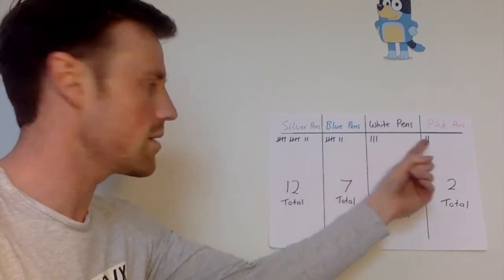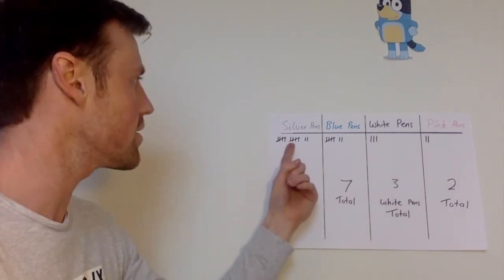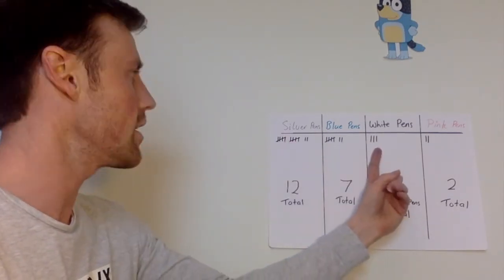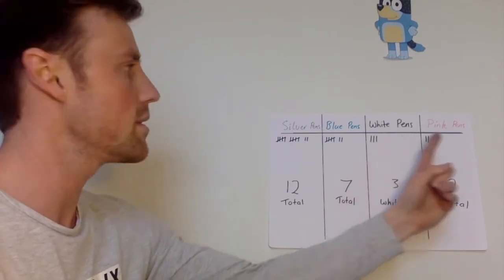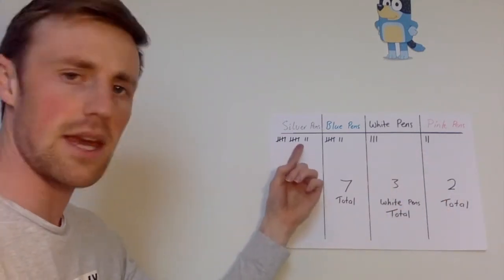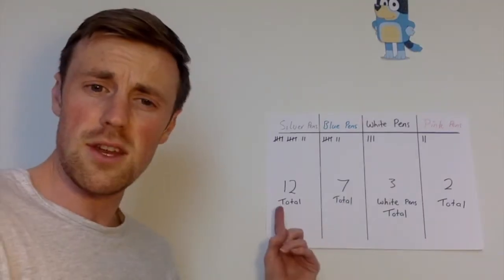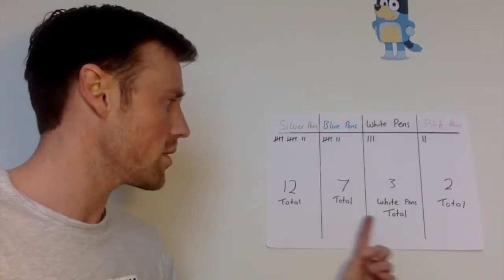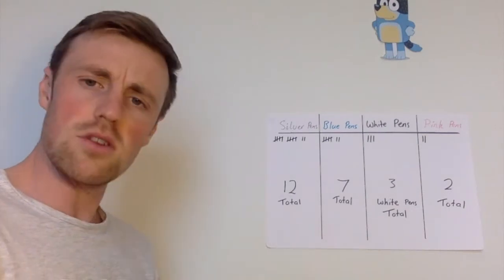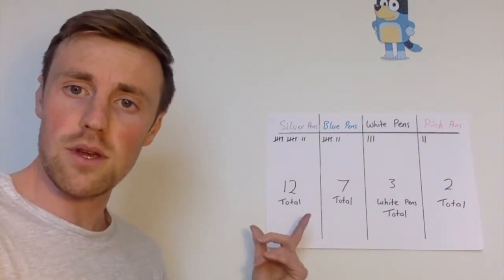Once you have your tallies, count them all up in the different categories. So I had silver pens, blue pens, white pens, and pink pens. You need to count them all up in your different categories, then find the total. The total is very important — I'm going to show you why later on.